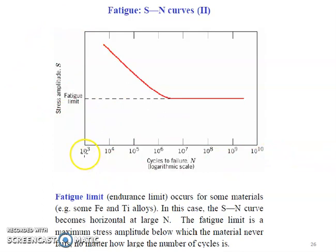Number of cycles start from 10 to the power of 3. We don't draw beyond this scale because the data becomes unclear at longer scales. Even though fatigue tests can take 24 hours or 48 hours, only days and hours are recorded.